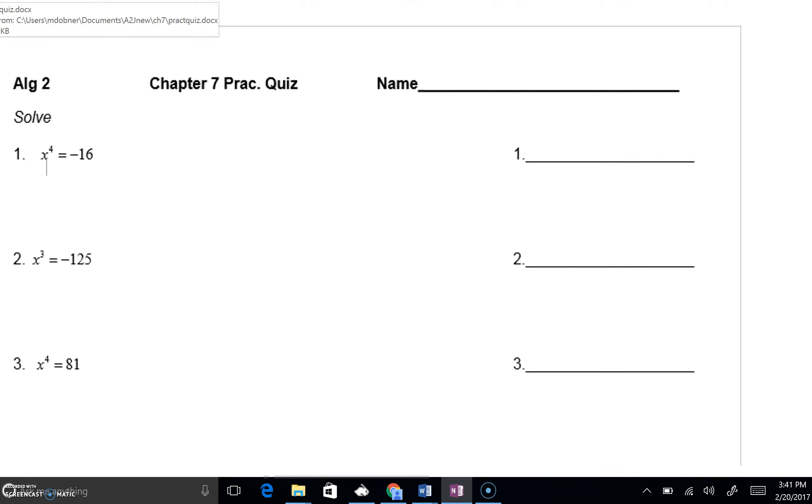To get rid of a fourth power in number 1, we're going to have to take a fourth root on both sides. Very important for us to remember, whatever that power is, we'll take the same type of a root.